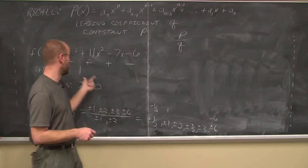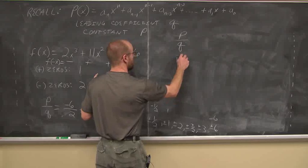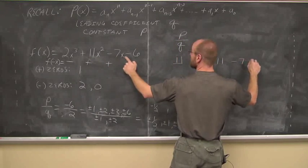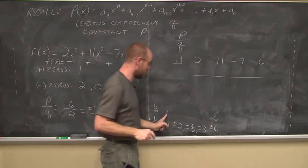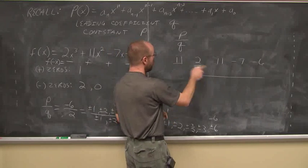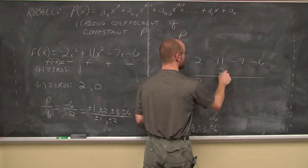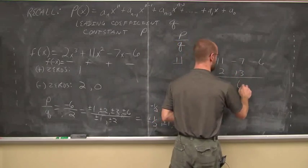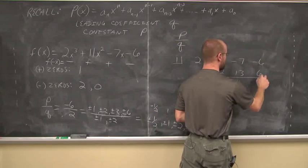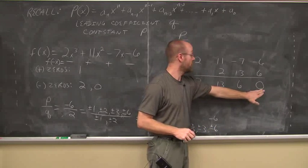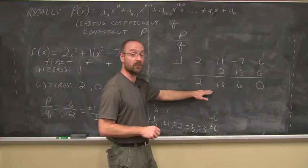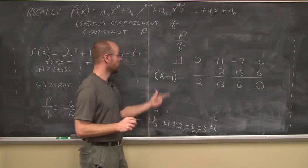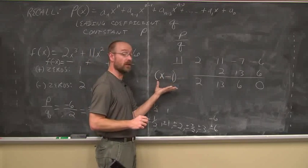Let's verify using synthetic division. I'll test positive 1 first. My coefficients are 2, 11, -7, -6. Bring down 2. 1×2=2; 11+2=13. 1×13=13; 13+(-7)=6. 1×6=6; -6+6=0. We get a remainder of zero, which means x=1 is indeed a factor. So (x-1) is a factor of this polynomial, and I've found the positive zero to be 1.